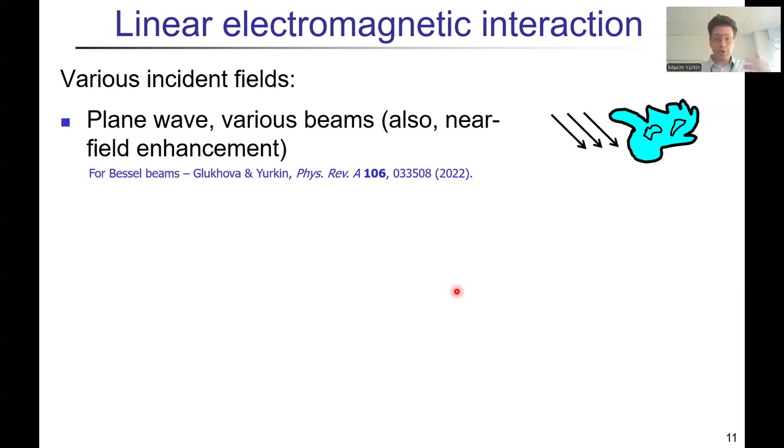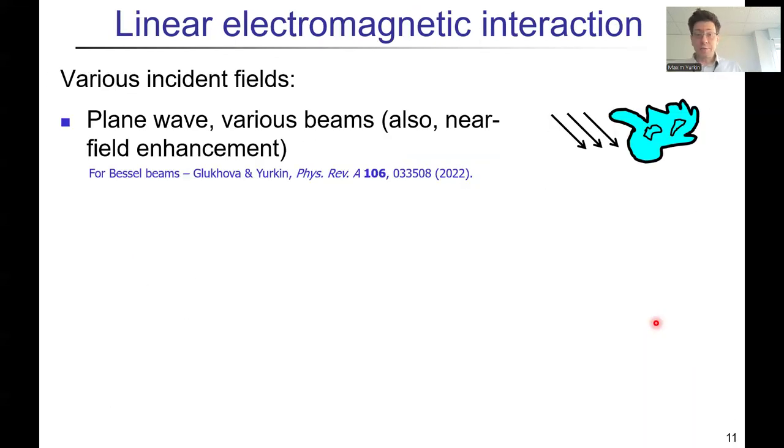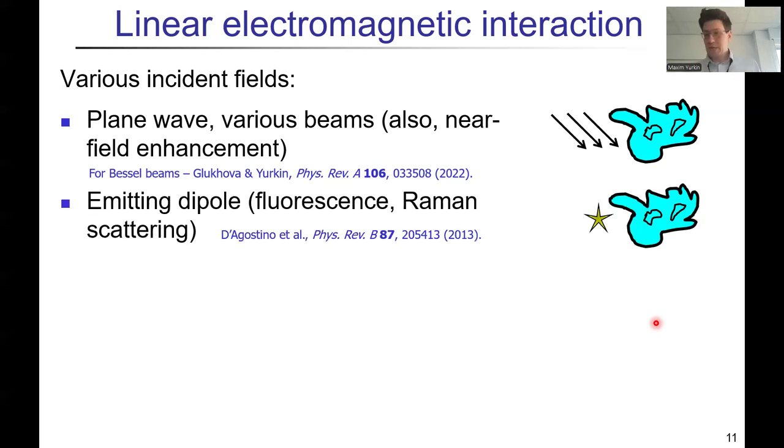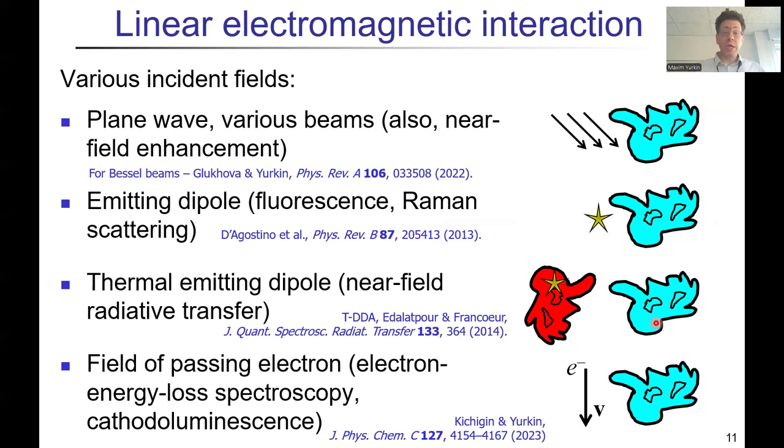Another flexibility of the DDA comes from the fact that actually, if you look at the equations here, the incident field is just the right hand side. So you can use any incident field, you only need to know its value on each of the dipoles. Well, usually in the center of these dipoles. So that means you can use any incident field, can be plane wave, can be different beams, we will talk about a little bit about it later. It can be also some emitting dipoles, so basically you put point dipoles and by this you can model some quasi-classical phenomena like fluorescence or Raman scattering. You can again put this emitting dipole in the particle and then you can model near-field radiative transfer, so some thermal exchange. Or you can even replace this field by that of the field of the passing electron. So again, scattering seems to be not really related to scattering, at least not as electromagnetic setting, but can be described by exactly the same equations. You just change the incident field.